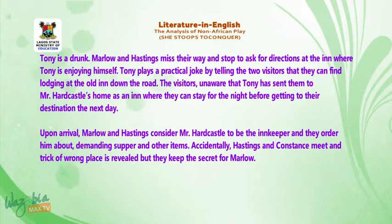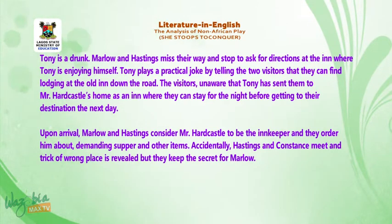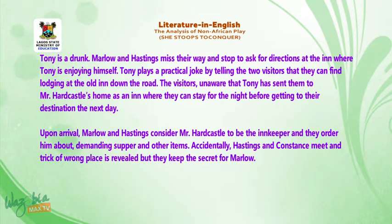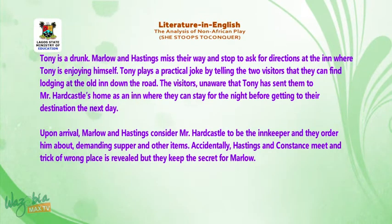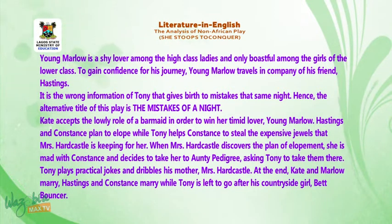Tony plays a practical joke by telling the two visitors that they can find lodging at the old inn down the road. The visitors, unaware that Tony has sent them to Mr. Hardcastle's home as an inn, stay for the night before getting to their destination the next day. Upon arrival, Marlowe and Hastings consider Mr. Hardcastle to be the innkeeper and order him about demanding supper and other items. Accidentally, Hastings and Constance meet, and the trick of wrong place is revealed, but they keep the secret from Marlowe.